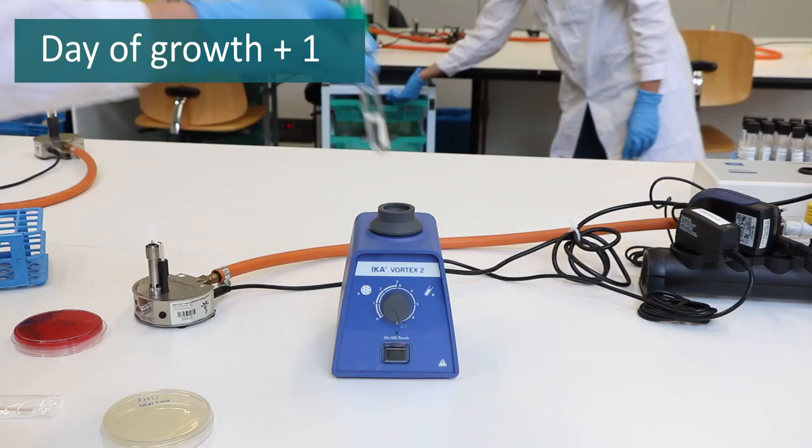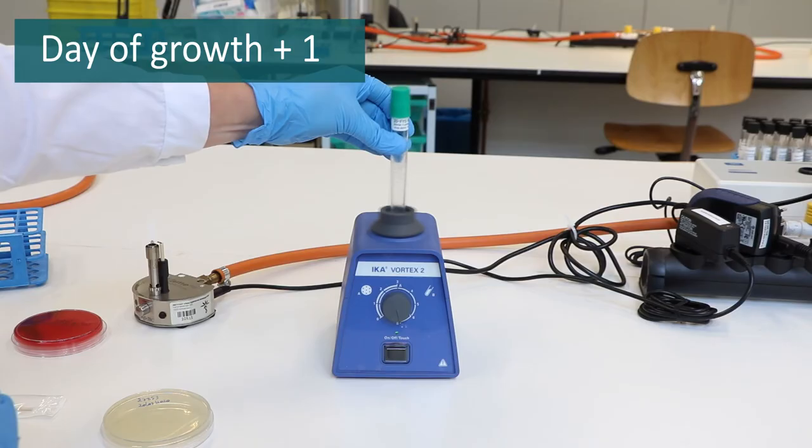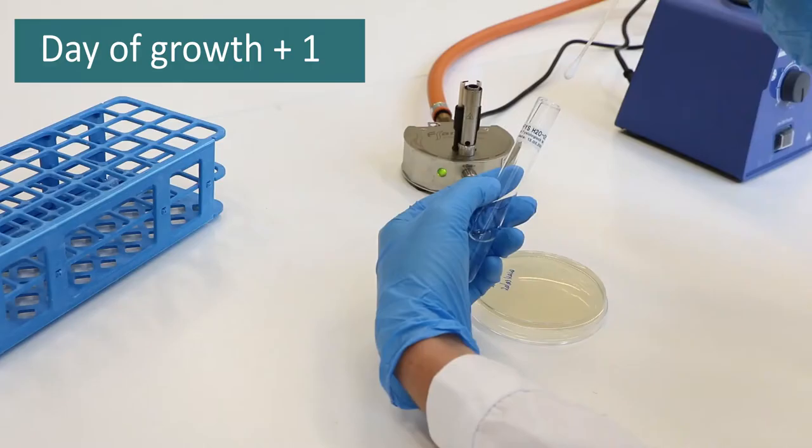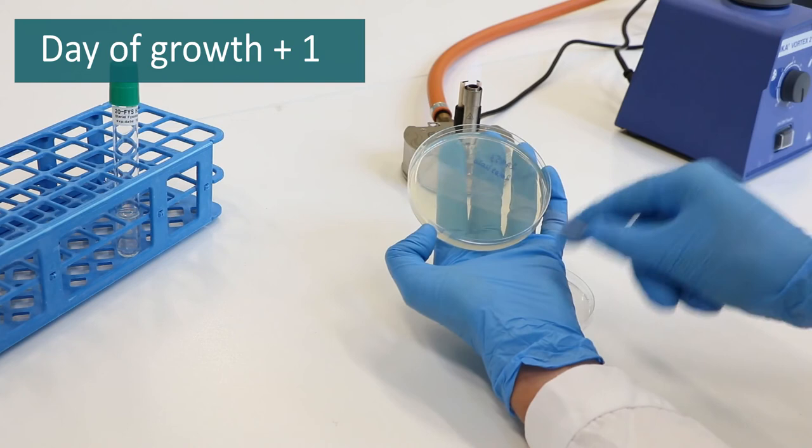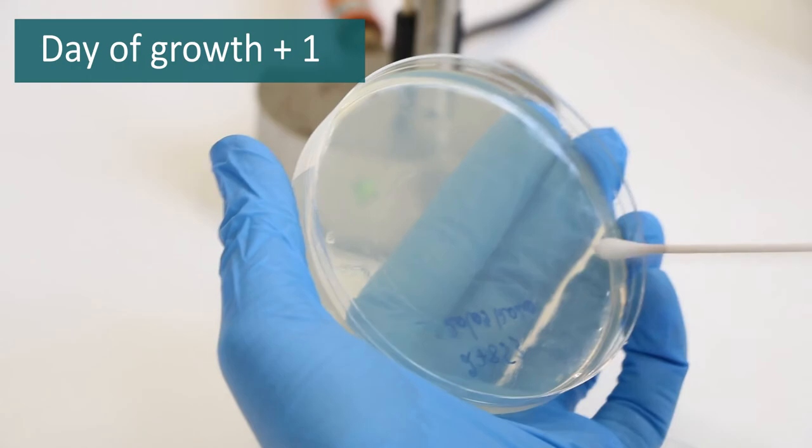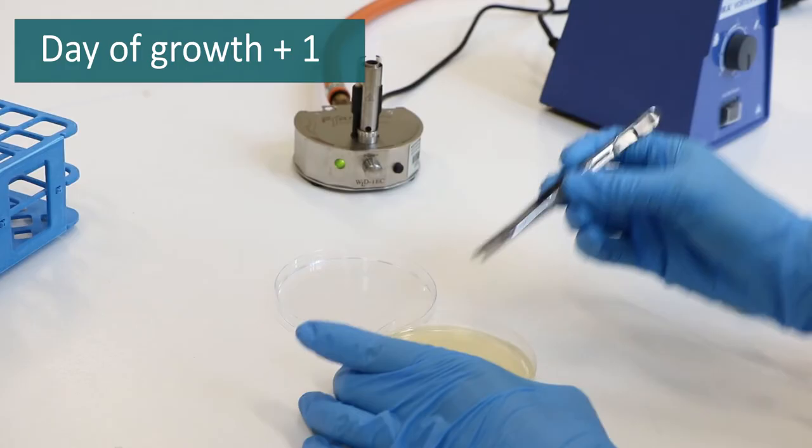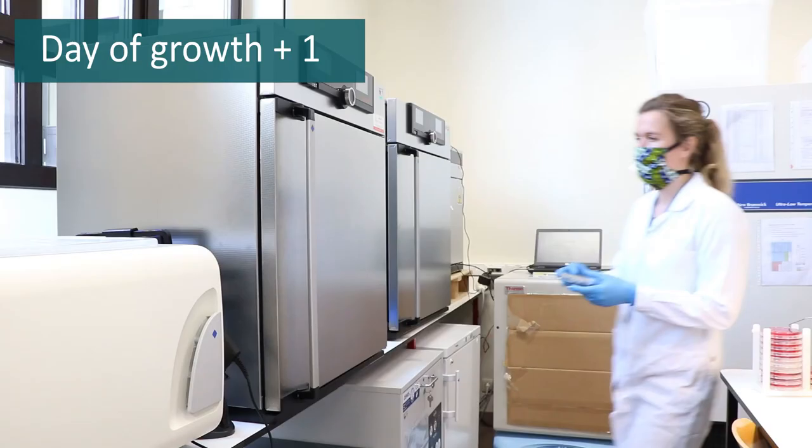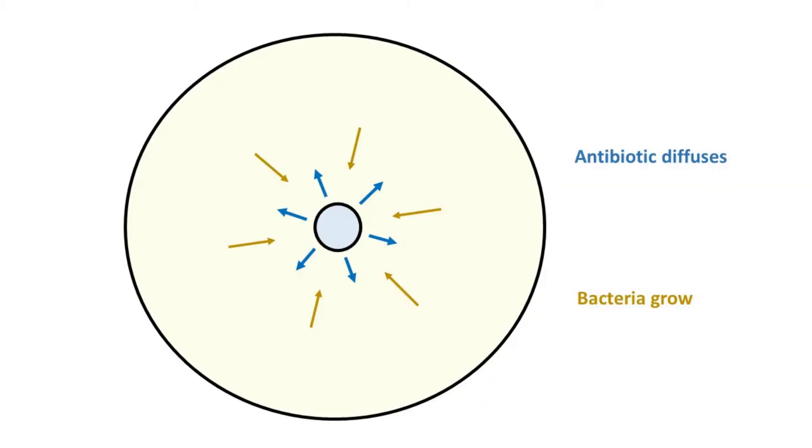For disc diffusion, a standardized bacterial suspension is spread on a specific solid culture medium. Antibiotic discs impregnated with a specific antibiotic are placed on top of the medium. The plates are incubated overnight. During overnight incubation, the antibiotic diffuses through the agar around the disc while the strain is also growing.